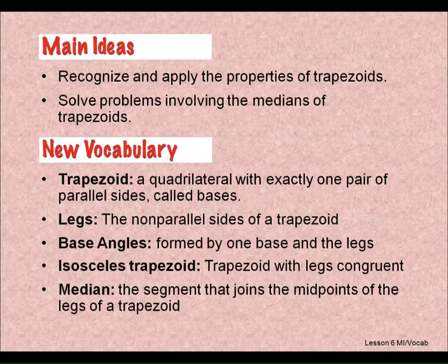The legs of a trapezoid are the non-parallel sides. So they've got a set of bases, a set of legs. The non-parallel sides are what we call the legs. The base angles are formed by one base and one of the legs. We'll look at a figure of that here in a second.